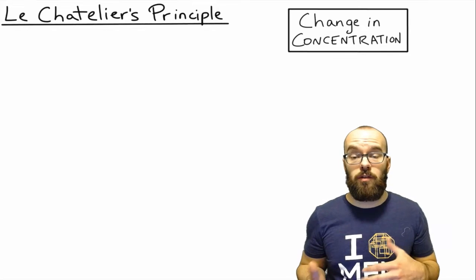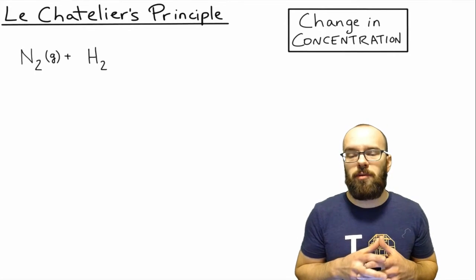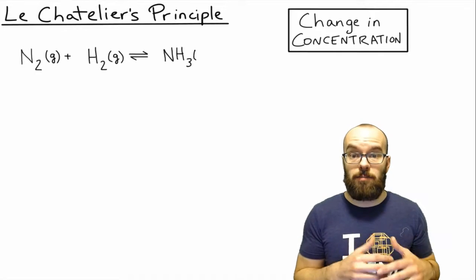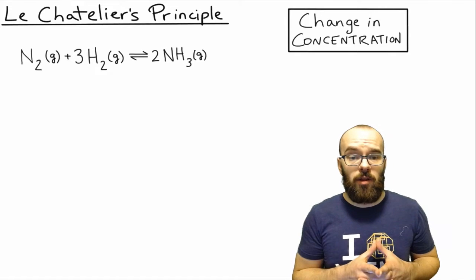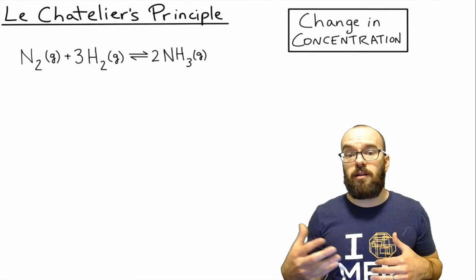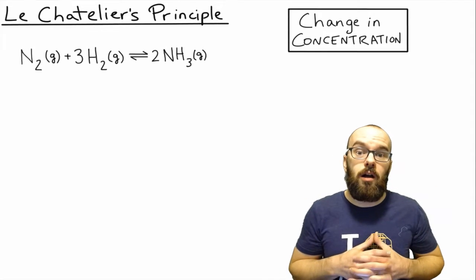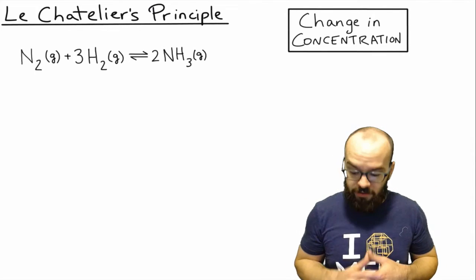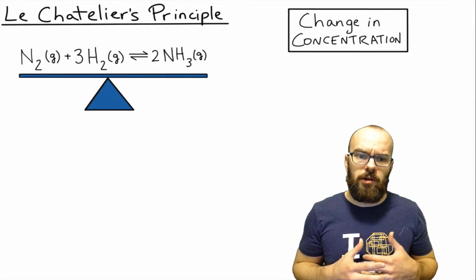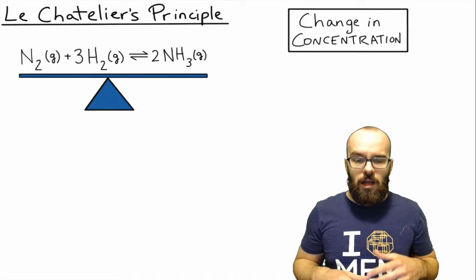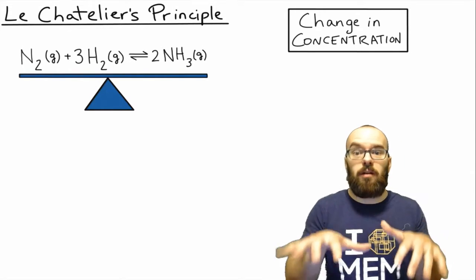Now let's look at what happens when we change the concentration of either a reactant or a product. Let's look at this reaction: nitrogen gas plus hydrogen gas yielding ammonia gas. This is an important industrial process called the Haber process. We'll think about this in terms of a seesaw — adding or subtracting things from one side will make it unbalanced.